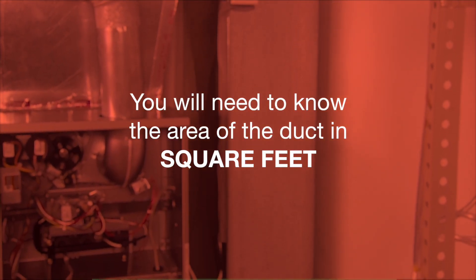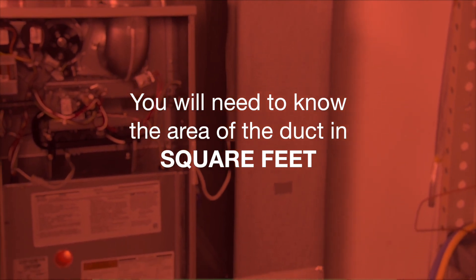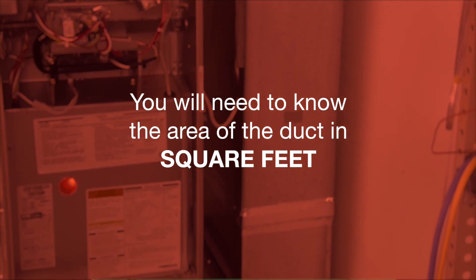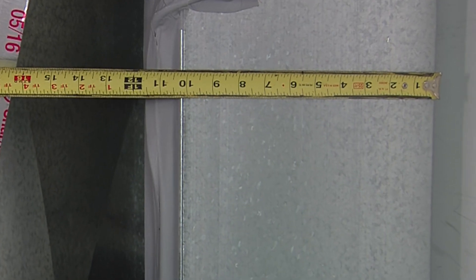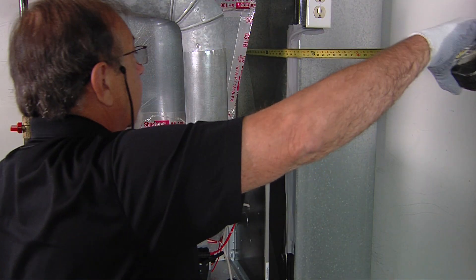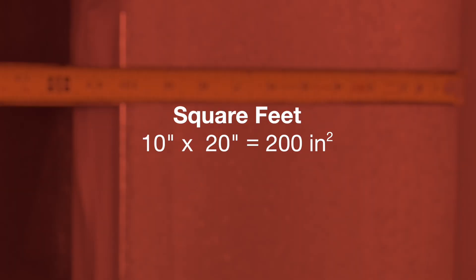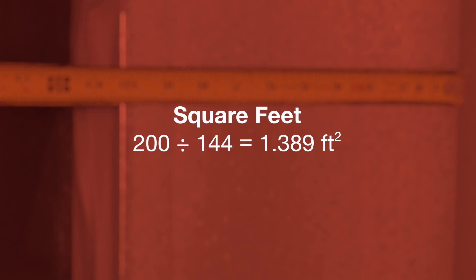To calculate CFM, you will need to know the area of the duct in square feet. Measure the width and depth of the duct in inches, then multiply the two dimensions to get the area in square inches. In this example, the duct is 10 inches wide times 20 inches deep for a total of 200 square inches. To convert to square feet, you must divide your answer by 144. In this example, the area of our duct is 1.389 square feet.